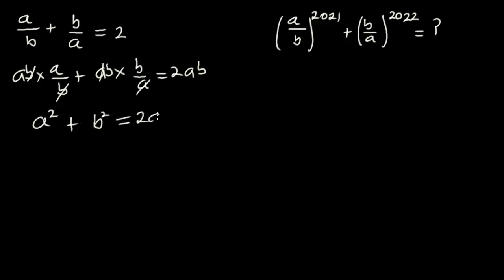Now from here we are going to transpose 2ab to the left hand side. Doing that, you are going to have a squared minus 2ab plus b squared is equal to zero.